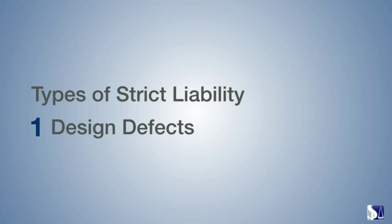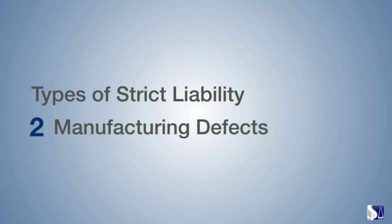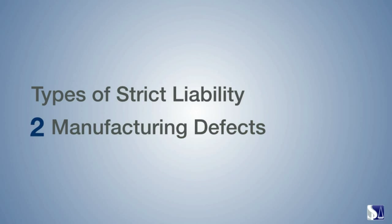The second category is manufacturing defects. Manufacturing defects can occur even if the product's design was not faulty. A product can be inherently flawless in its design, but by the time it comes off the assembly line, it can be defective.